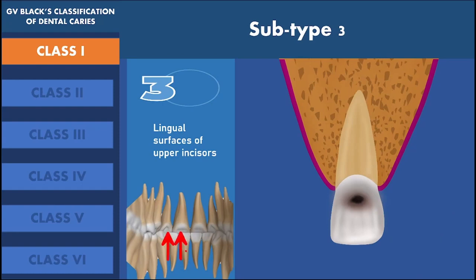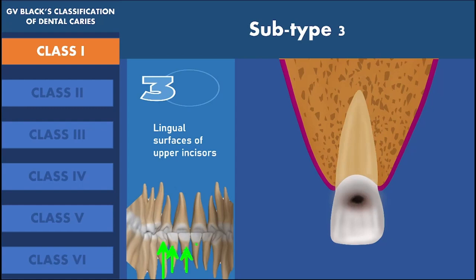The maxillary incisors — that is the central and the lateral incisors — the lingual surface often has the lingual pit. These lingual pits are often more prone for dental caries. The mandibular incisors, mandibular canines, and maxillary canines are not included in this category. G.V. Black considered that the maxillary canine lingual aspect and the mandibular anteriors lingual aspect are more resistant for caries occurrence, so they are not included in this classification.